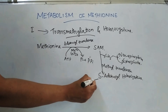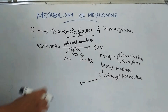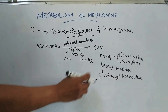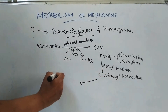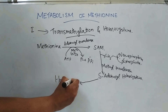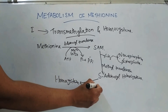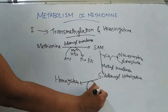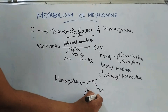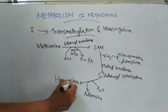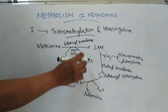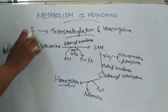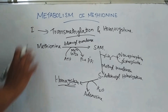The next step is hydrolysis of the sulfur-carbon bond of S-adenosylhomocysteine, and it forms homocysteine and adenosine. This completes the first stage — transmethylation and conversion of methionine to homocysteine.